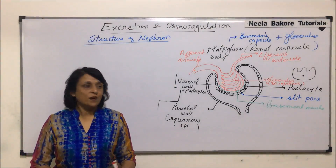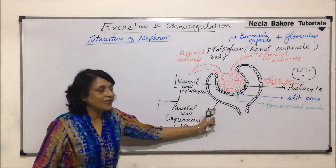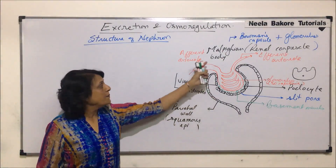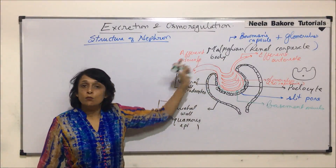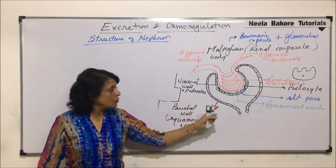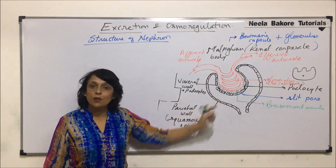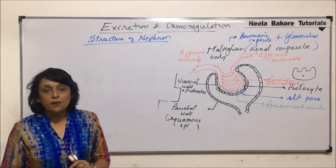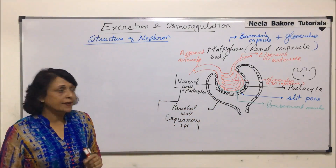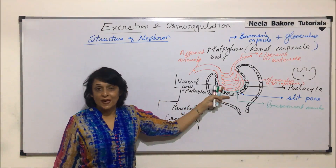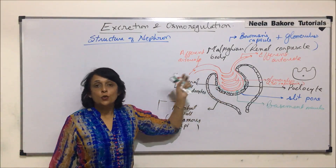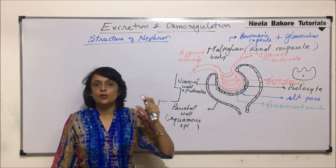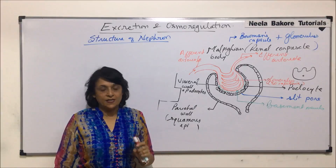In the previous segment, we have seen the structure of the Malpighian body, which includes Bowman's capsule and glomerulus. Now, what we are trying to see here is the filtration membrane, through which the actual filtration takes place.